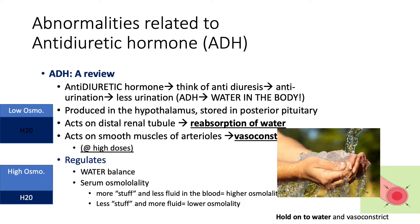ADH means water in the body because antidiuretic hormone means antidiuresis, causing less urination, which causes more water to stay in the body. If there is more ADH, more water in the body, then less water is leaving through the urinary tract. So lots of ADH means lots of water in the body, less water in the urine. Little ADH means little water in the body, because it's leaving through the urinary tract — more water in the urine.